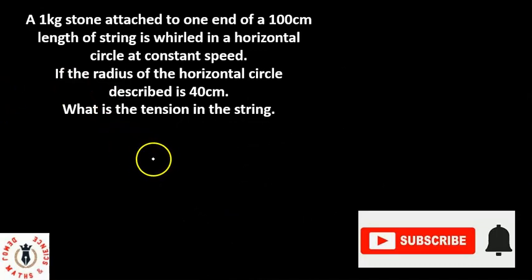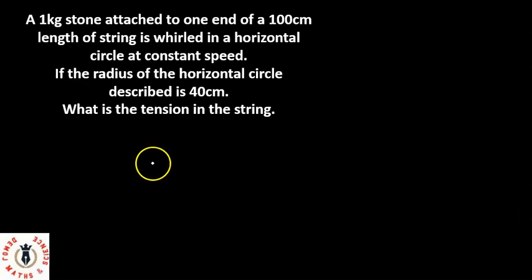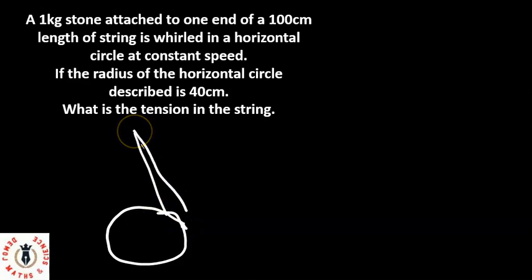The second example says a 1 kg stone attached to one end of a 100 cm length of string is whirled in a horizontal circle. Now this is my string and the 1 kg stone is whirled around this horizontal circle.